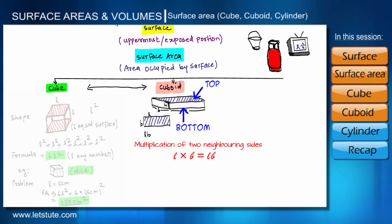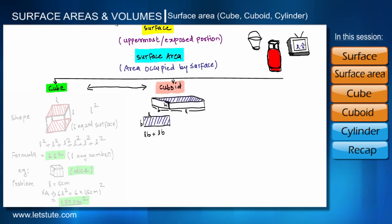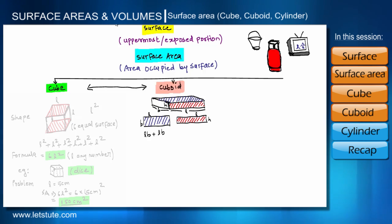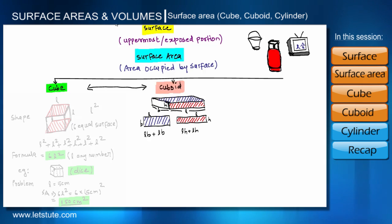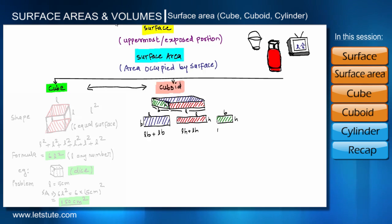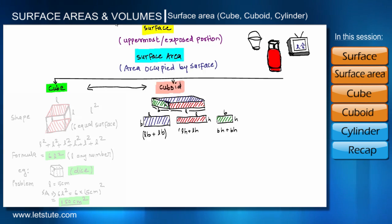Since there are two surfaces — top and bottom — we add LB + LB. The front surface has length L and height H, so its area is L × H. Since there are two such surfaces — front and back — we add LH + LH. The left surface has sides B and H, so its area is B × H. Since there are two such surfaces — left and right — we add BH + BH.